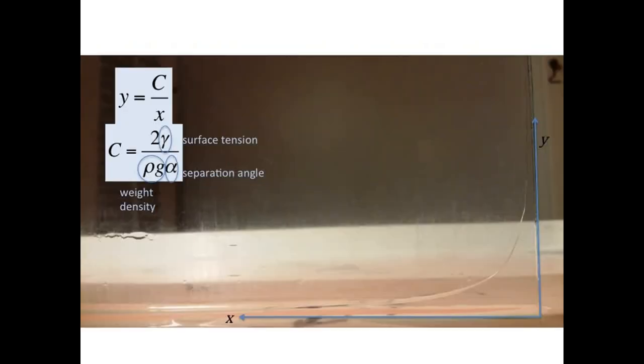Under the case of complete wetting, where the contact angle is zero in the Young-Dupre equation, the resulted profile of the height y is the reciprocal of the distance from the attached ends, which is denoted by x.